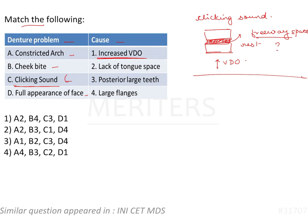Coming to cheek bite: one reason is increased vertical dimension, which causes the cheek to get entrapped. Or it could be because of large posterior teeth — if the teeth are very large, the cheek tends to get entrapped buccally, resulting in a cheek bite. So B-3.